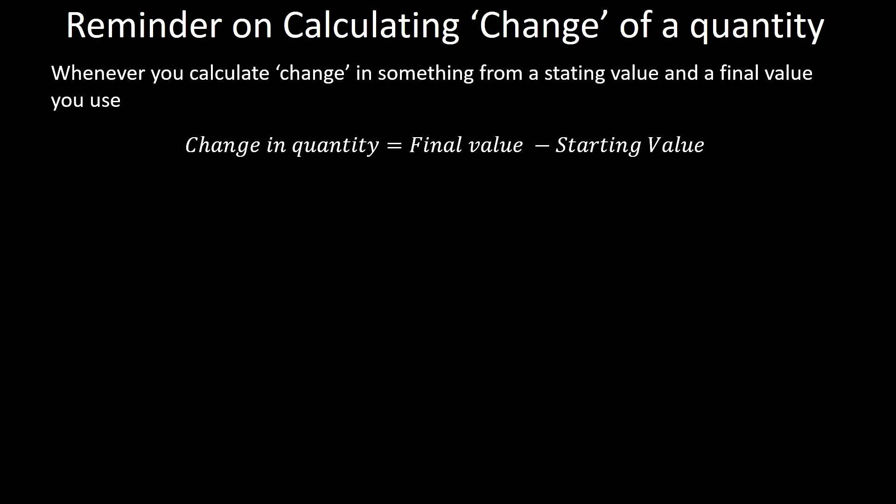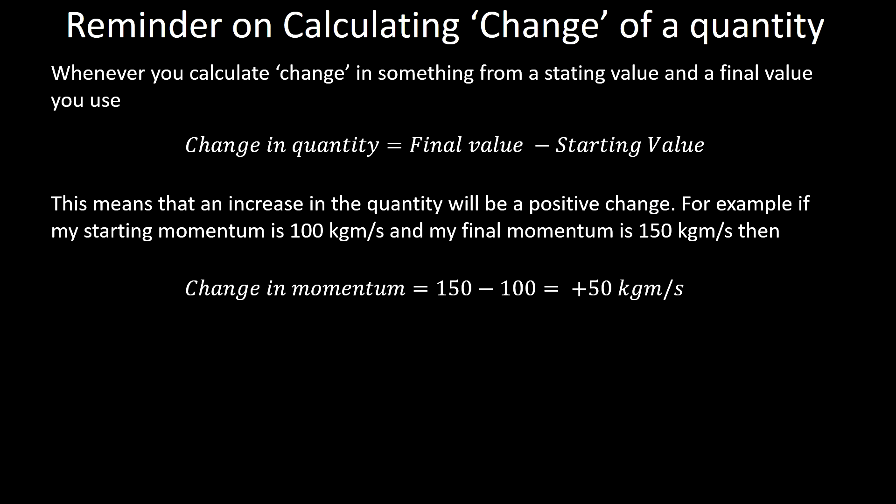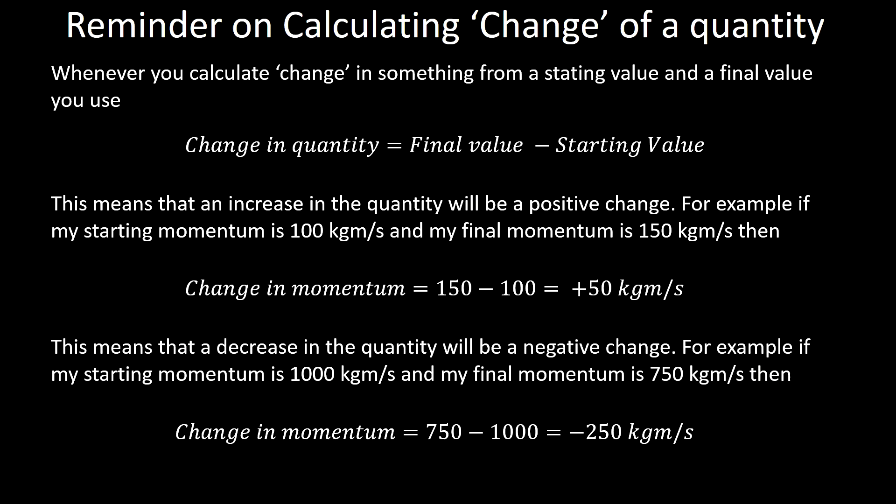One final thing before we get into the problems: calculating the change of a quantity. Whenever you calculate the change of any quantity, it's the final value minus the starting value. For example, if an object has a starting momentum of 100 kg·m/s and ends up with 150, then the change is plus 50. Similarly, if momentum decreases from 1,000 to 750, the change is minus 250 kg·m/s. Remember that momentum has two allowed units: kilogram metres per second and newton seconds.